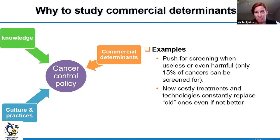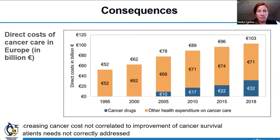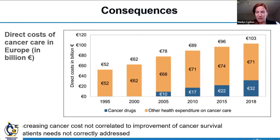The consequence is that the cost of cancer care has really increased — it has doubled in the last 25 years — while cancer mortality decreased by only about 20 percent, and didn't even decrease in some countries. Worse, patient needs such as palliative care and social care remain really underdeveloped in Europe. We need to better understand the role of these commercial determinants, which is why WHO has reinforced its work in this area.